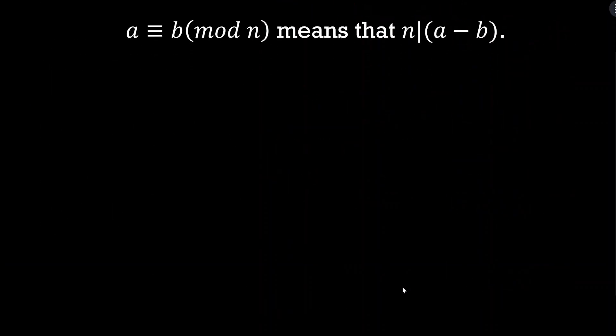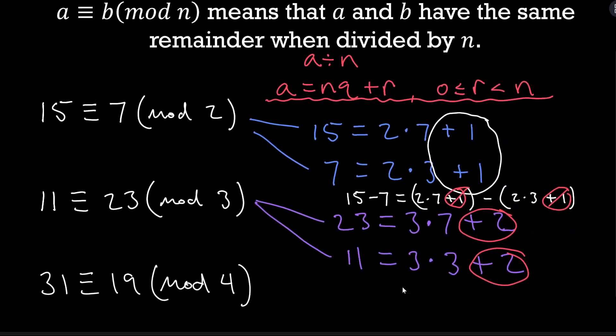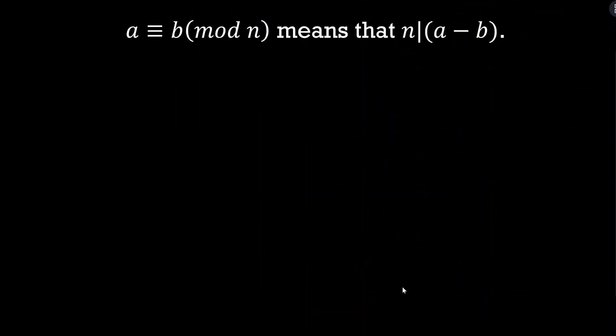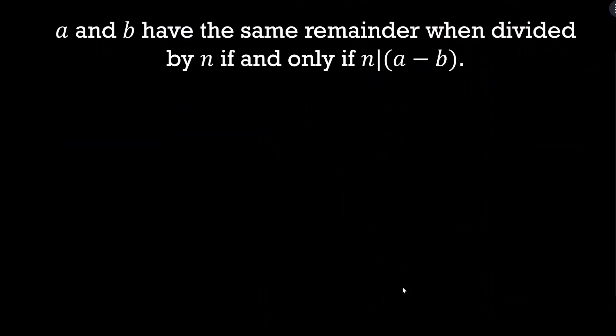The remainders canceling is really key to understanding why the n-divides-a-minus-b definition is equivalent. This second definition is really preferred for writing proofs — it's efficient. But intuitively, if I'm just trying to come up with numbers that are congruent, or determine whether two numbers are congruent, the remainder definition is how I think about it. So: intuitive definition for understanding, efficient definition for proof writing. Now let's prove these are equivalent.